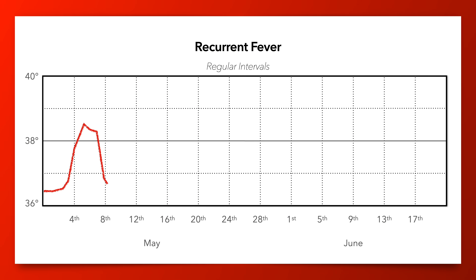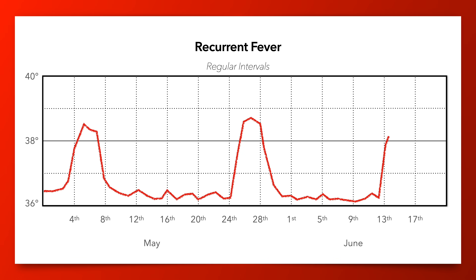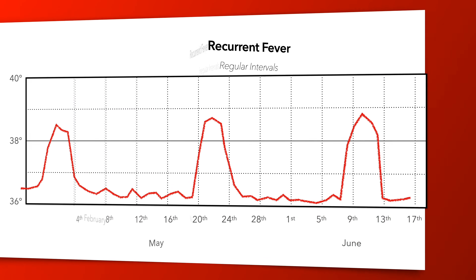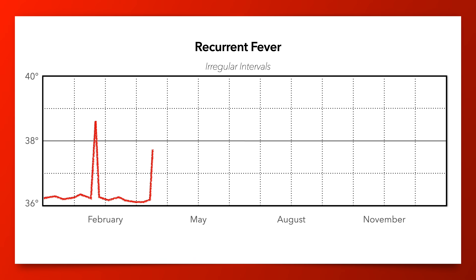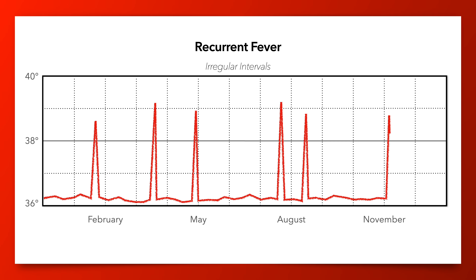Recurrent fevers refer to episodes of fever that recur over 6 months duration or greater. They can occur at regular or irregular intervals. When the intervals are regular, they are known as periodic or cyclic fevers. A classic example would be PFAPA syndrome. A recurrent fever that occurs at irregular intervals is characteristic of several monogenic periodic fever syndromes, such as familial Mediterranean fever.